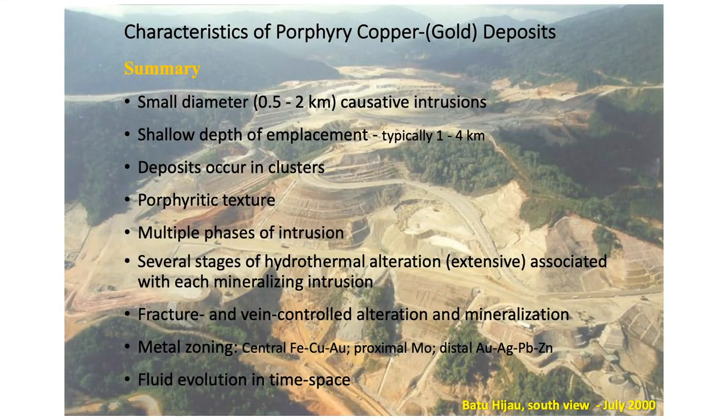Why do they call them porphyries? Because they're related to rocks that are porphyritic, which tells you about magma ascent physics and when vapor phase saturation occurred, carrying copper and gold out of the melt. There are multiple phases of intrusion — six or seven phases varying from pre-mineralization to post-mineralization. There are several stages of hydrothermal alteration affecting cubic kilometers of rock. Each mineralizing intrusion adds metals while altering surrounding country rock to various alteration minerals such as biotite, actinolite, epidote, sericite, chlorite, pyrophyllite, dickite, and kaolinite.